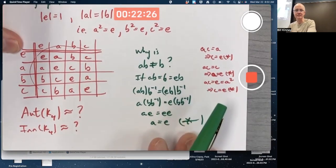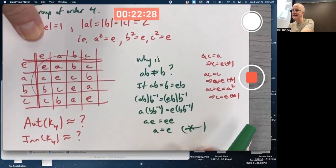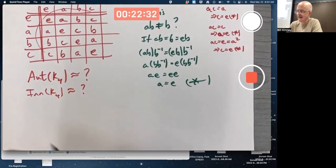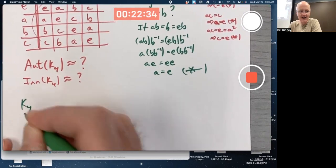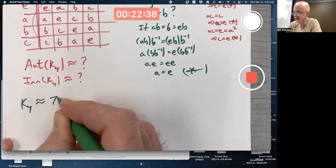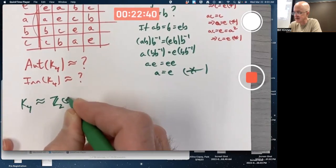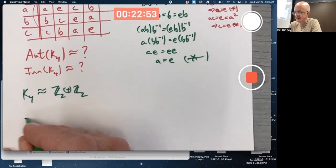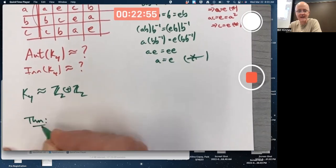Okay. K4 itself, though, is isomorphic to a group we looked at on Monday. K4 itself is isomorphic to the external direct product of Z2 with itself. And in fact, I did mention this on Monday. It's a theorem. You can take it to the bank.